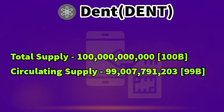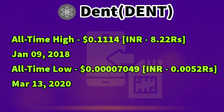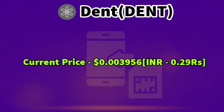The current circulation is 99 billion tokens. The all-time high price is 0.1114 USD, which is 8.22 rupees, on January 9, 2018. The all-time low price is 0.00007049 USD, which is 0.0052 rupees. The current price is 0.003956 USD, which is 0.29 rupees.